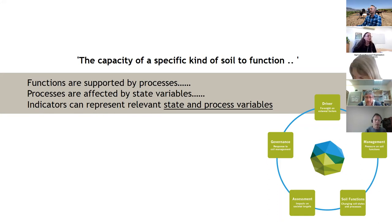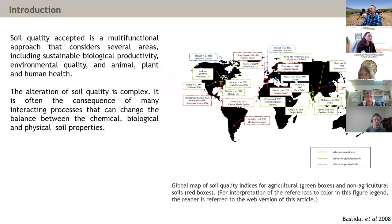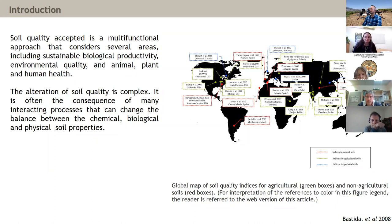When we talk about the capacity of a specific kind of soil to function, functions are supported by processes, and processes are affected by state variables. We need to define indicators that can represent the relative state or process of the variables we want to evaluate. What we want to do is select indicators that represent the state and process variables of soils. This is a complex issue requiring a holistic approach integrating biological, chemical, and physical properties.